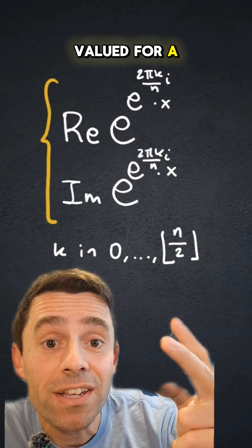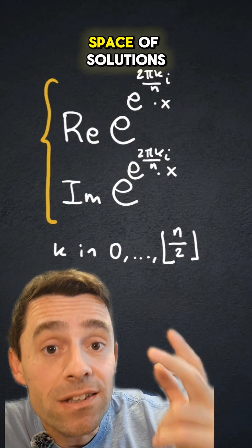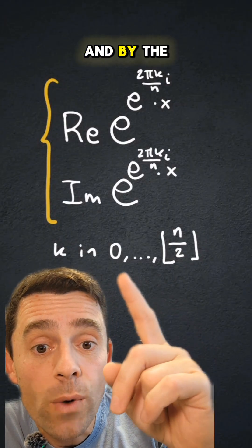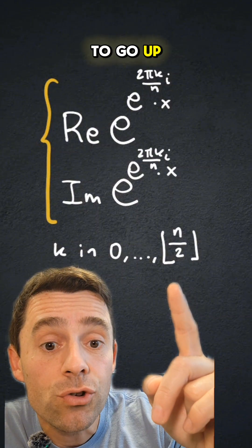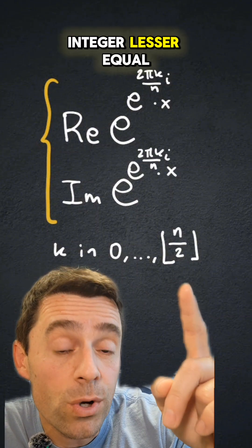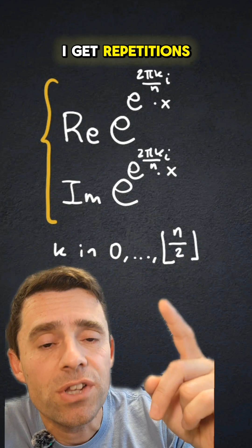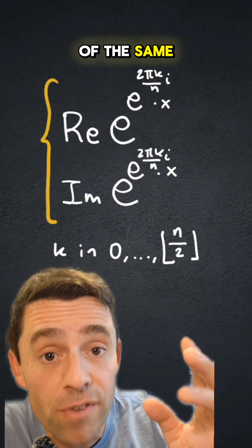And that gives me an entire family of functions that, for one thing, they are real valued; for a second thing, they generate the space of solutions of the differential equation. And by the way, I only have to go up to the greatest integer less than or equal to n over 2 because after that I get repetitions up to sign of the same functions.